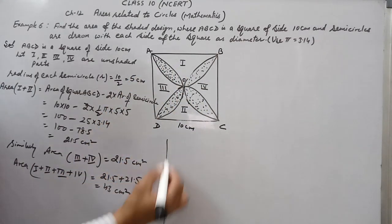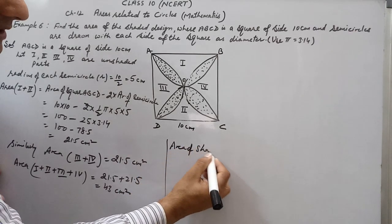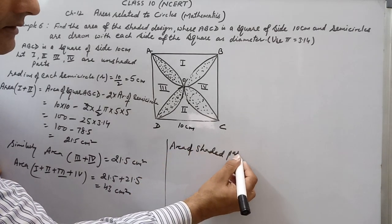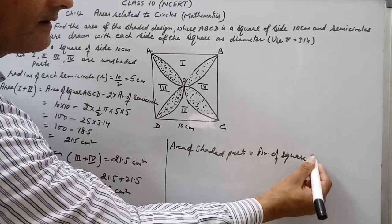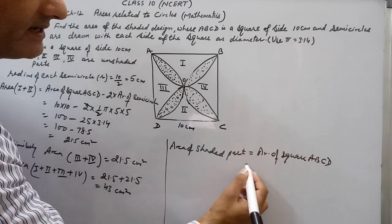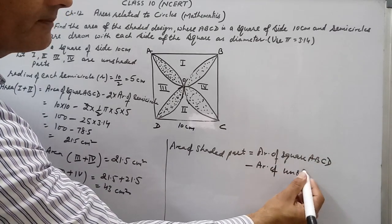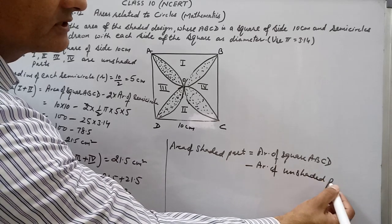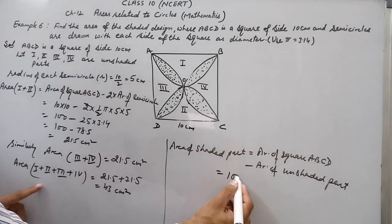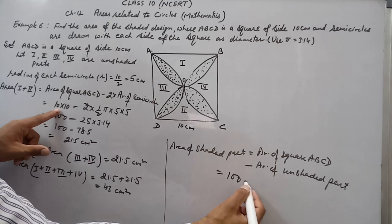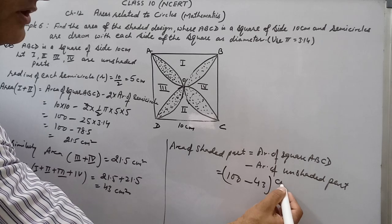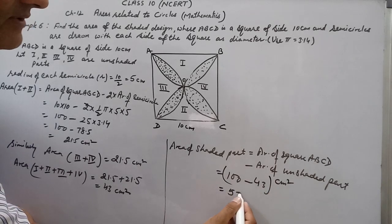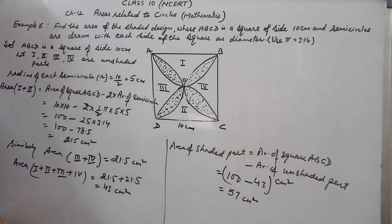Area of shaded part = area of square ABCD minus area of unshaded part = 100 − 43 = 57 cm². This is how we find the area of the shaded design.